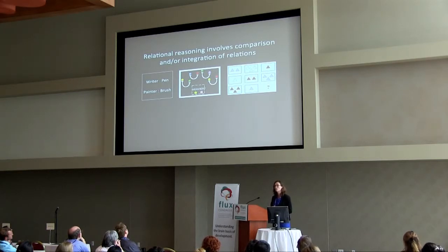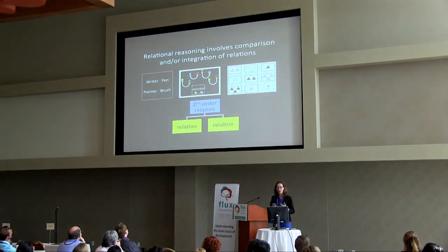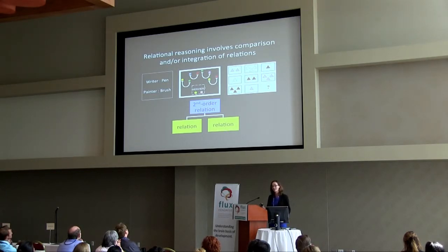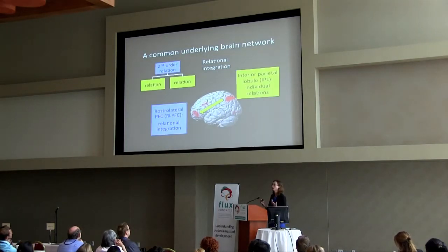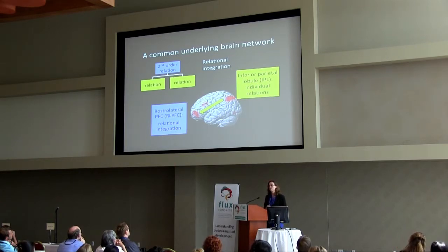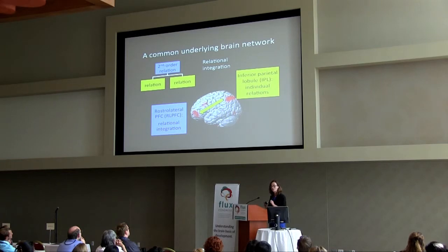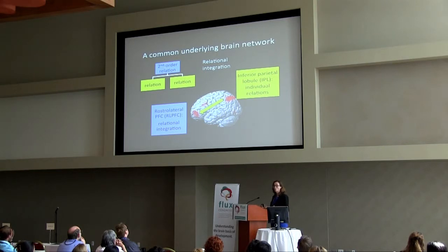It turns out to be a really good predictor of academic performance. All of these tests have this kind of structure of individual relations that you have to process, and then you have to either integrate or compare them in what we call a second-order relation. We've done a number of fMRI studies and found a common underlying brain network. The exact regions depend on the kind of stimuli — visuospatial or verbal — but we see these regions over and over, in particular the inferior parietal lobule and the rostrolateral prefrontal cortex.